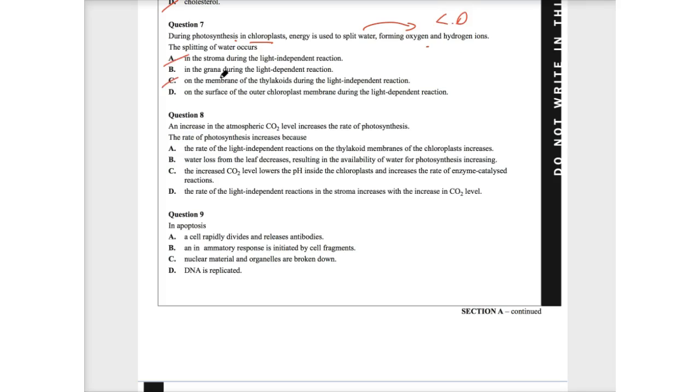So I'm going to get rid of the independent reactions already from the get-go. When I look at the next thing, the splitting of water occurs in what? Well, we know that the light dependent phase occurs in the grana. And so we know that grana is consistent with light dependent reaction. Therefore, we are going to circle B and we can immediately rule out D. Therefore, B is the answer.